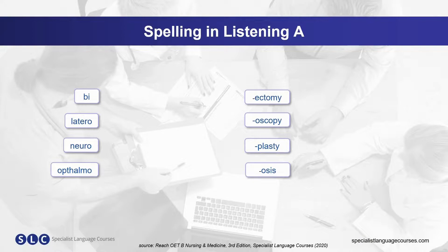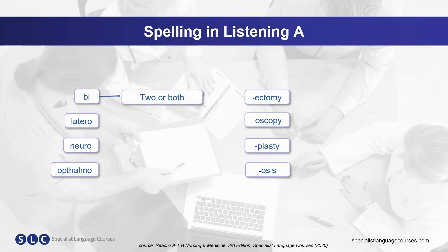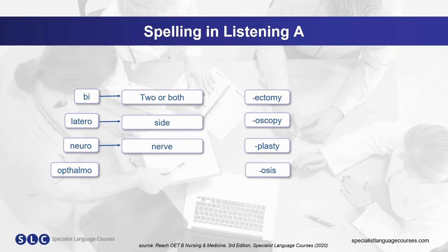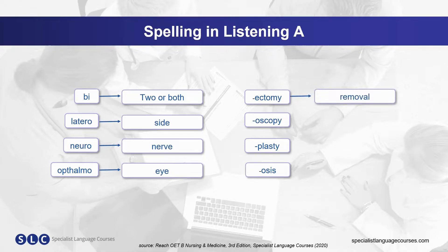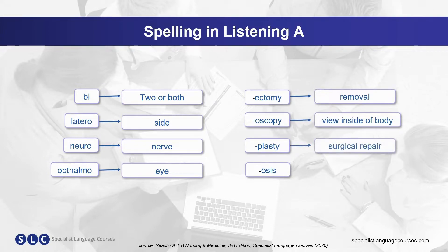What can you do to improve your spelling for Listening Part A? Being comfortable with common prefixes and suffixes can help you write your answers confidently. Let's have a look at some examples. 'By' refers to two or both; 'latero' means the side; 'neuro' means nerve; 'optimo' is to do with the eye; 'ectomy' refers to removal; 'oscopy' is a view inside the body; 'plasty' is a surgical repair; and 'osis' is an abnormal condition or state.